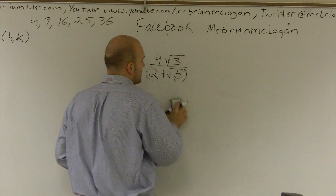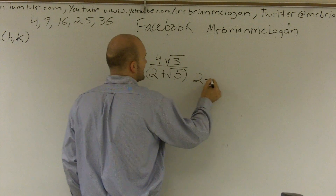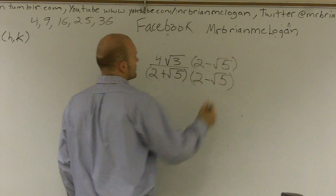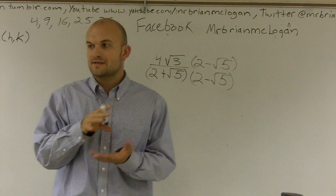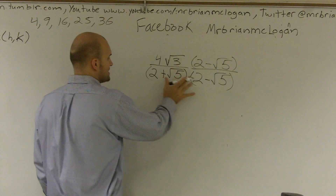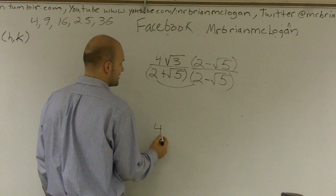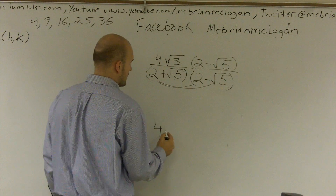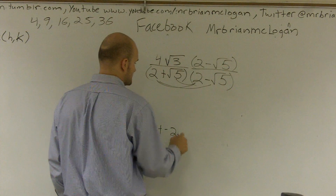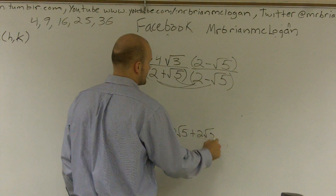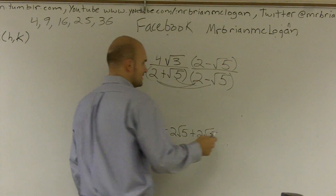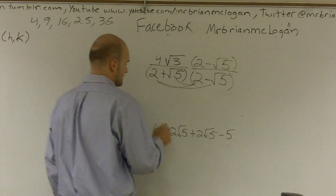So what we do is multiply by the conjugate, which is 2 minus the square root of 5, over 2 minus the square root of 5. You always have to multiply the top and bottom to keep the fraction the same. On the bottom, 2 times 2 gives 4. The two middle terms — negative 2 times the square root of 5 and plus 2 times the square root of 5 — cancel. Then square root of 5 times square root of 5 gives a negative 5.